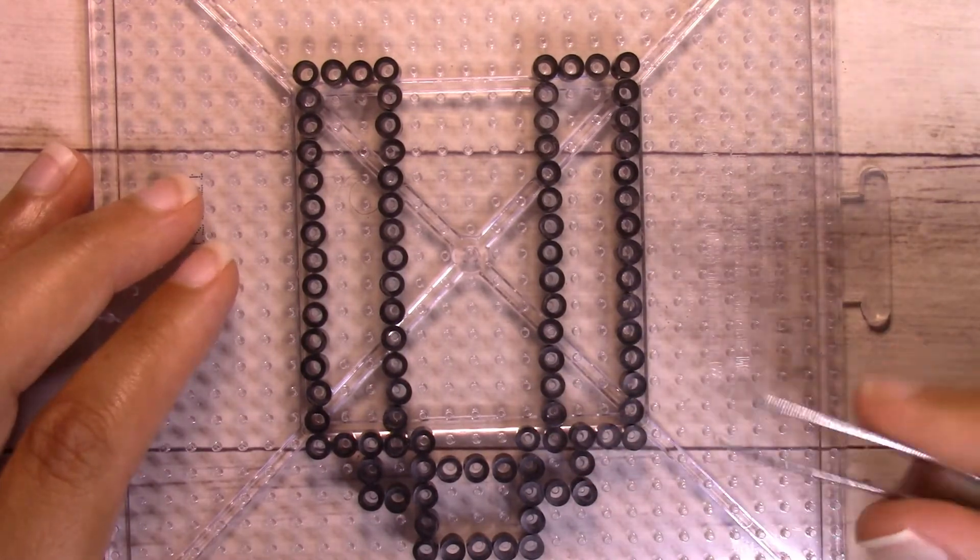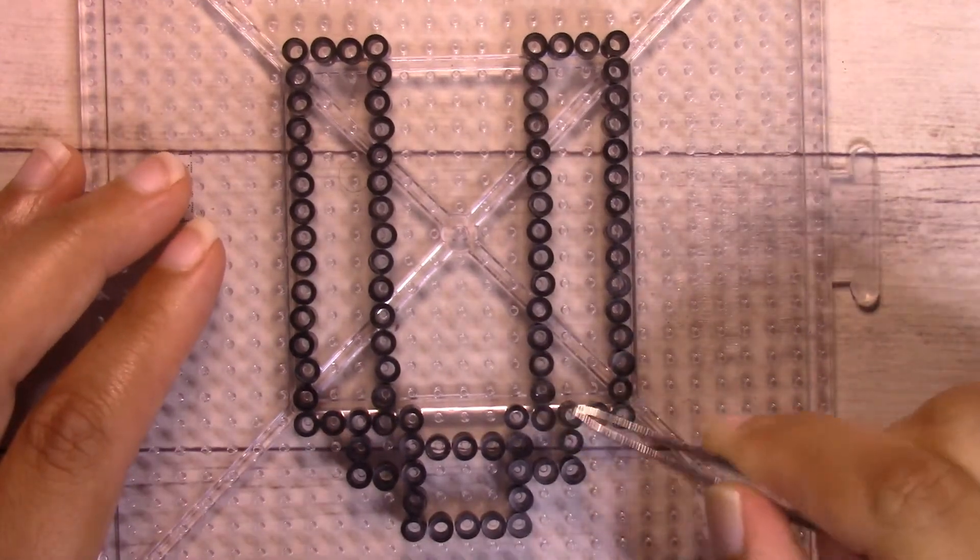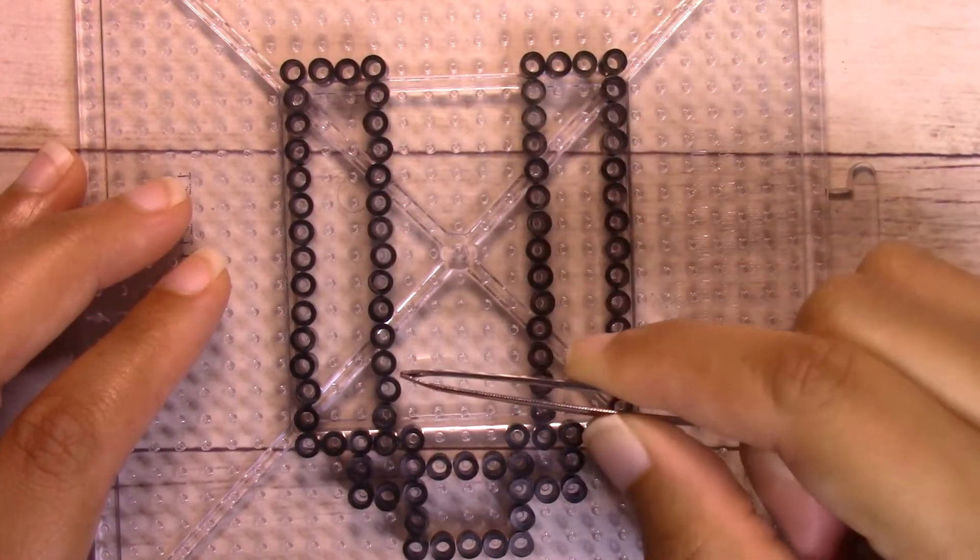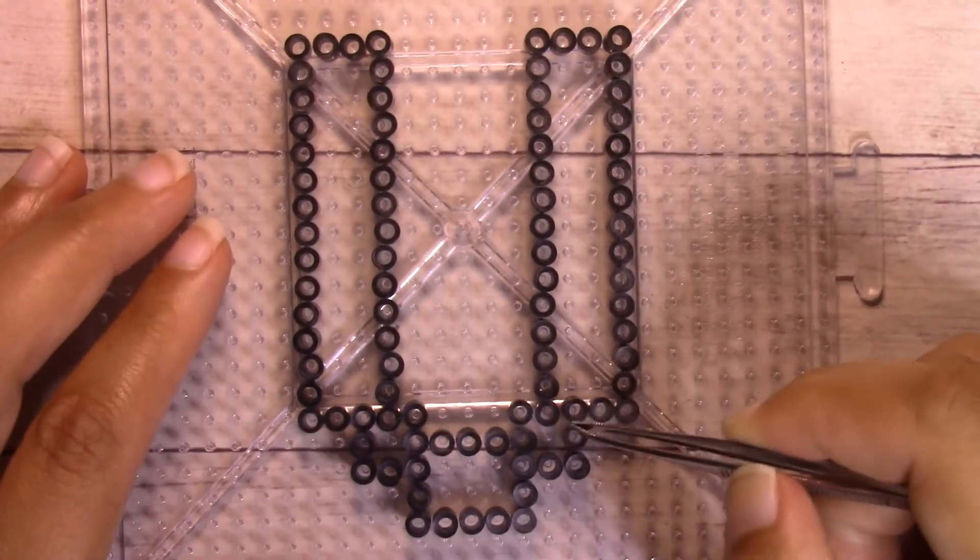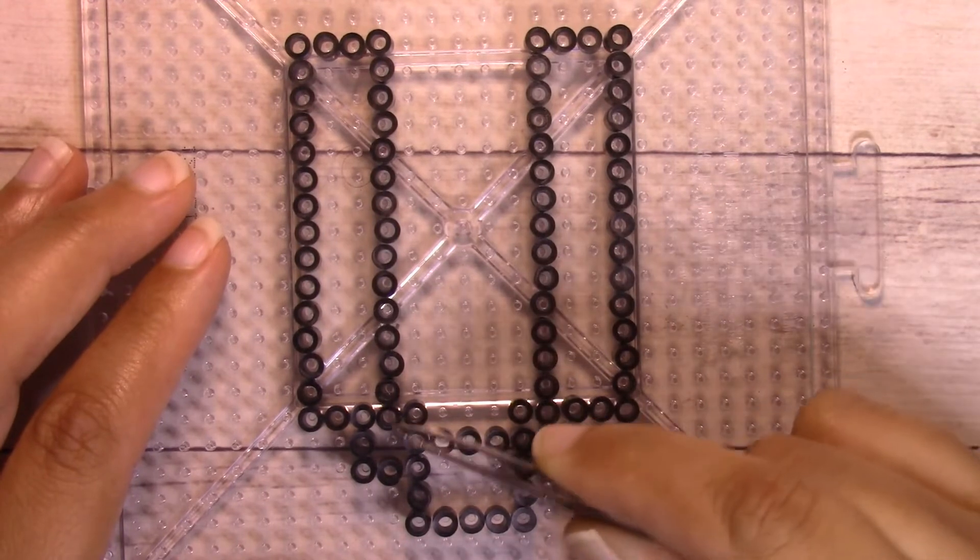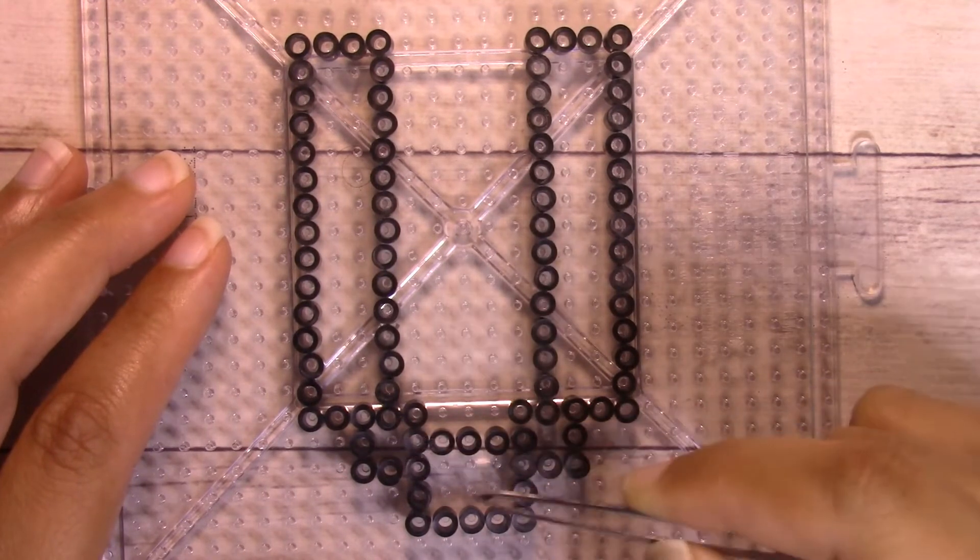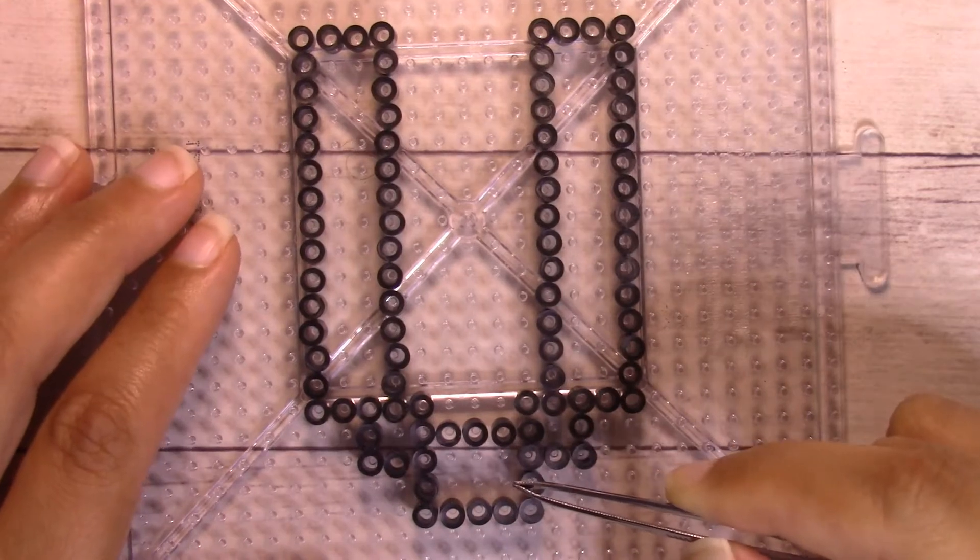And now the outline for the letter V is done and the next thing to do is going to be to fill it in. It's going to be the left side, the right side, the two little squares diagonally from those, and then the rectangle in the center.